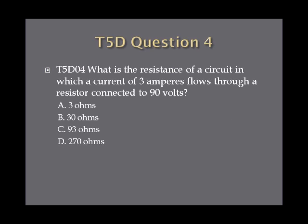Question 4: What is the resistance of a circuit in which a current of 3 amperes flows through a resistor connected to 90 volts? A. 3 ohms. B. 30 ohms. C. 93 ohms. Or D. 270 ohms.